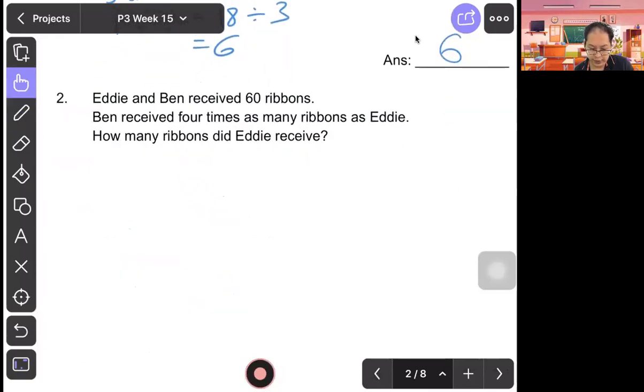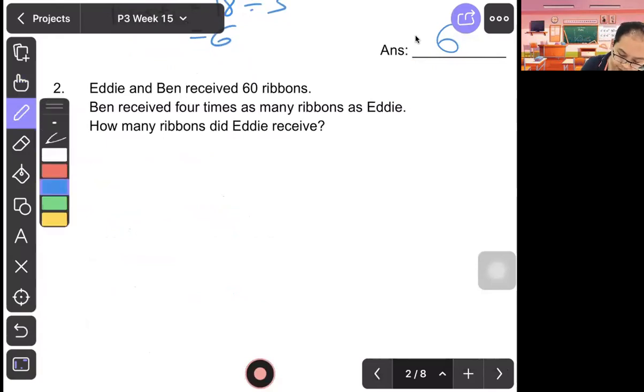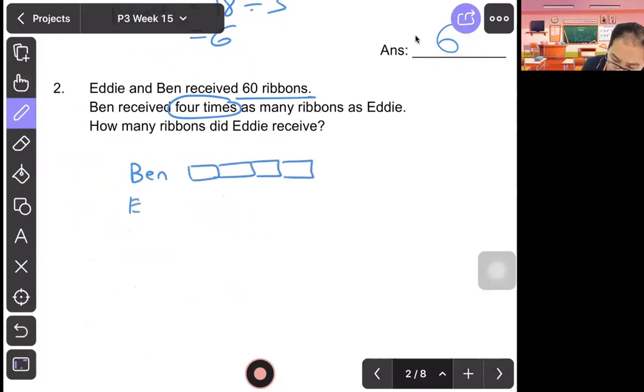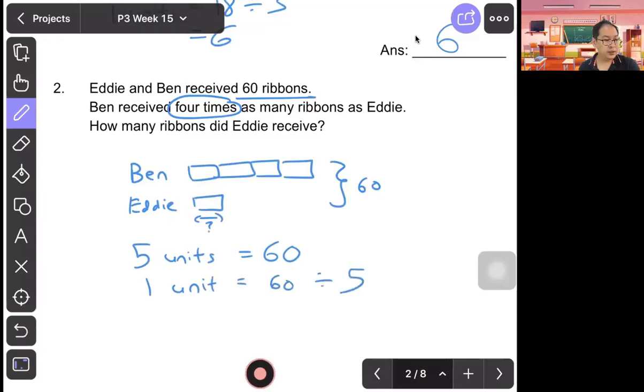Question two: Eddie and Ben receive 60 rebounds. Ben receives four times as many rebounds as Eddie. How many rebounds did Eddie receive? So Ben, four times means four units. Eddie, one unit. All together, 60. So you count there are five units all together equal to 60. To find one unit, we take 60 divided by 5. That will give us 12. So answer is 12. Eddie receives 12 rebounds.